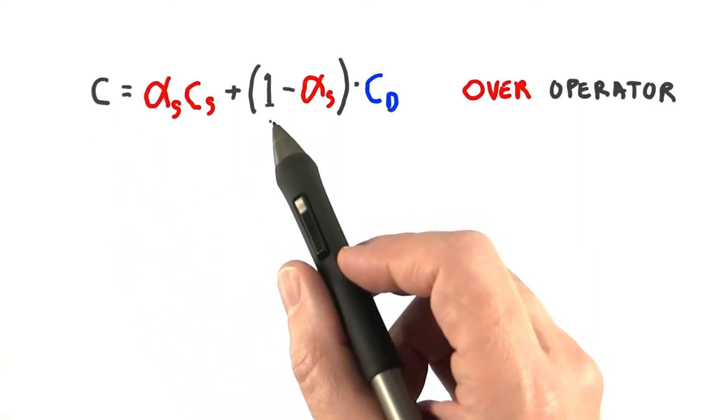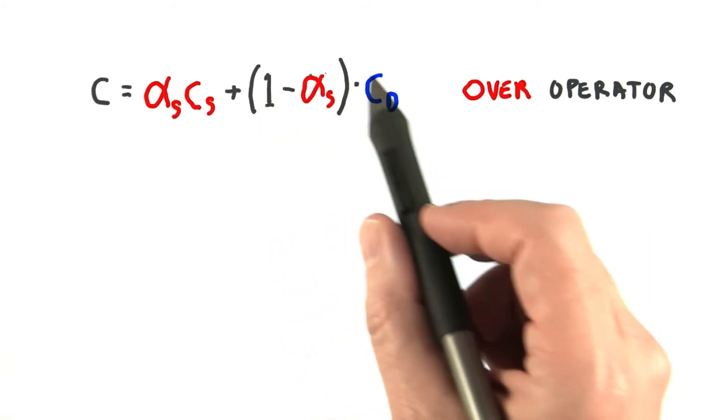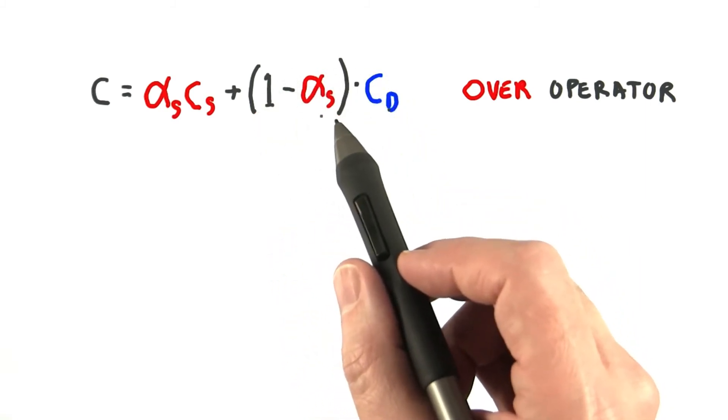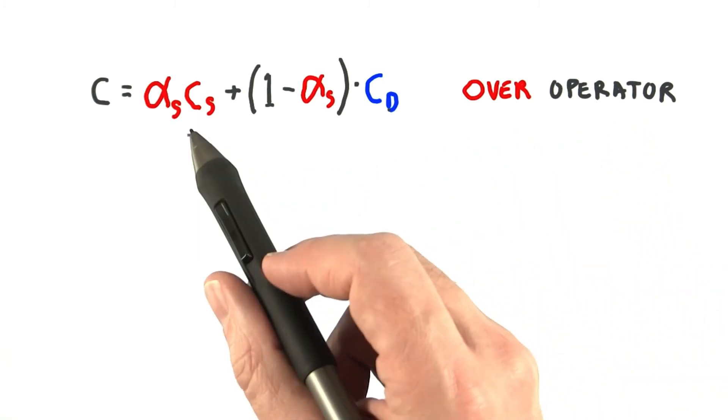To counterbalance this, this same alpha is subtracted from 1, and this value determines how much the destination color influences the result. This type of blend is called an over operator, as it gives the effect of putting one color over another.